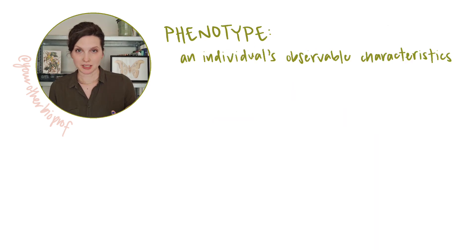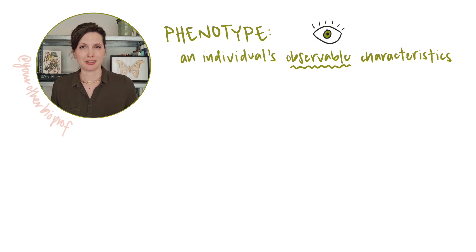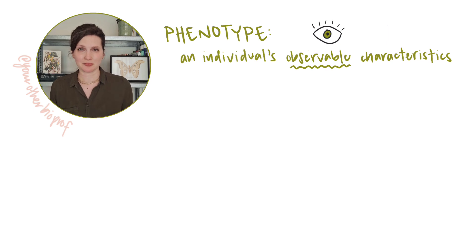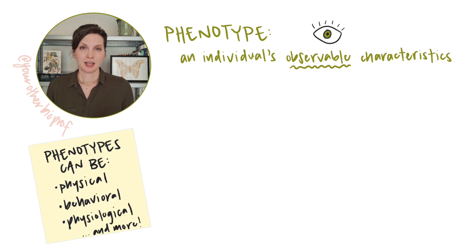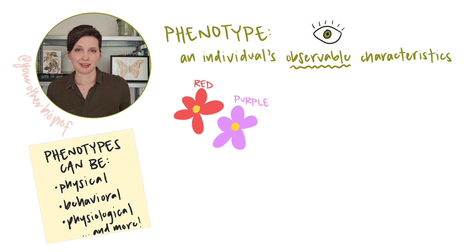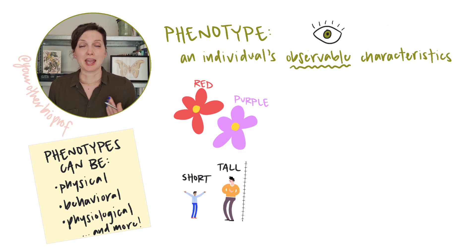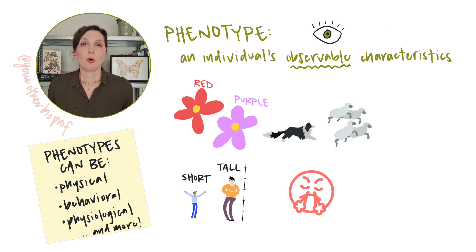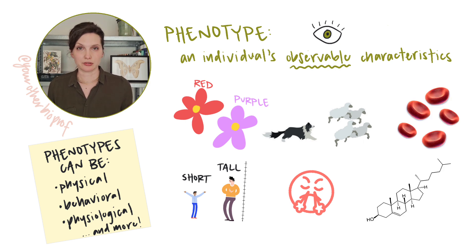We're going to start with the phenotype. Phenotype is what we observe about an individual for whatever characteristic or set of characteristics that we're interested in. Phenotypes are descriptive or measurable. Phenotypes can be physical characteristics, things like flower color or height, or they can be behavioral — aggression, herding behaviors — or physiological, more on the level of cells and molecules, like blood cell counts or hormone levels.